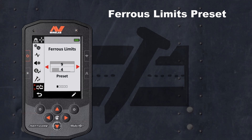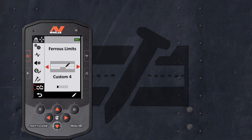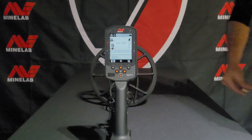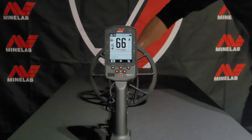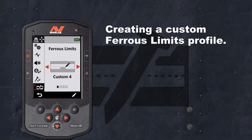The Ferris Limits Preset is designed to deal with the most common scenarios. In some cases, you may want to recheck or accept a desirable ferrous target. As an example, here in Canada, our modern coins are composed of ferrous steel. Most of our steel coins appear in the same area in the upper ferrous limits. This can be adjusted, and leads us to creating a custom ferrous limits profile.